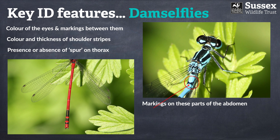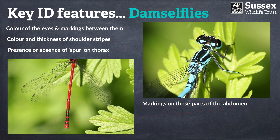Moving away from the thorax and onto the abdomen, segment two is once again really important — the markings on this segment will vary enormously from species to species and will help you ascertain what you're looking at. Moving along to the end of the abdomen, taking note of the coloration and any particular markings will be really beneficial. As with dragonflies, the colour of the wing spots — the pterostigma — is once again really useful, and the shape of the pterostigma can also help because some are more elongated than others.